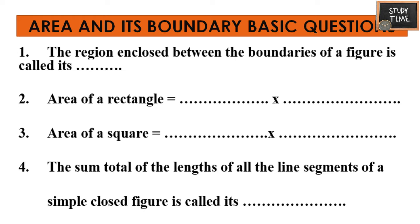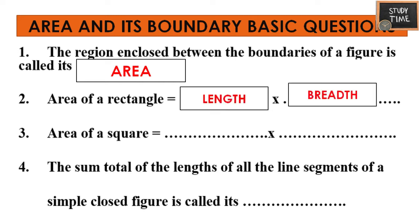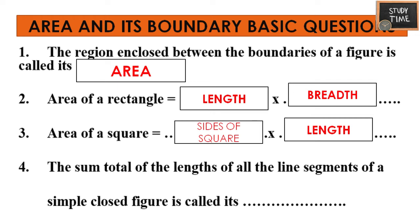Now let's see basic questions from this chapter. First: the region enclosed between the boundaries of a figure is called its area. Second: area of a rectangle equals length into breadth, or L into B. Third: area of a square is side into side. Fourth: the sum total of the lengths of all line segments of a simple closed figure is called its perimeter.